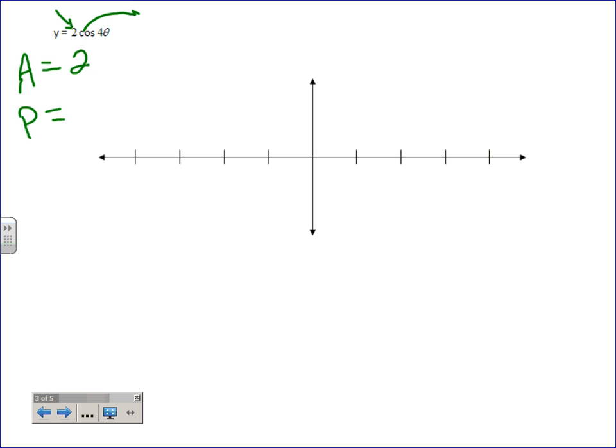Period. Well, what is cosine's usual period? Normally, it's 360, correct? And we're going to divide by, so what's that end up being? Only 90 degrees. Okay, so now why do you suppose I have you do that? Well, now I know that I can go like this and say that's 2, and this is negative 2.